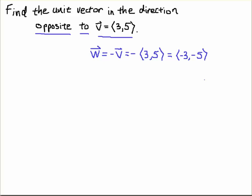If you multiply v by minus one then you multiply each of its components by minus one so the vector w which has components minus three minus five is in a direction opposite to the vector v.